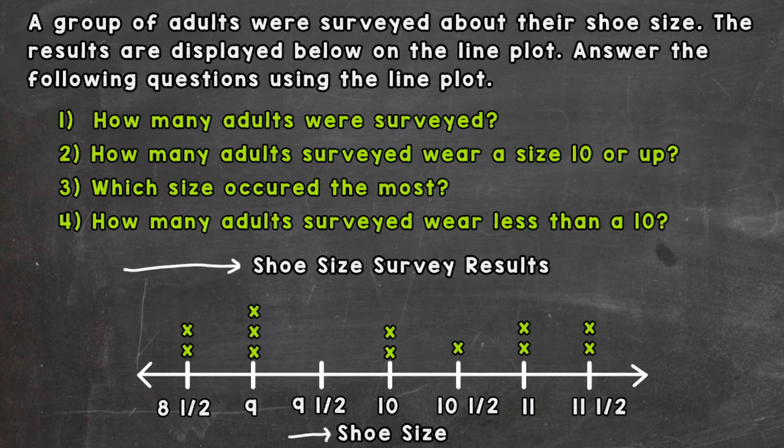Question one: how many adults were surveyed? Each X on the line plot represents an adult that was surveyed, so we need to count all the X's to see how many people were surveyed.